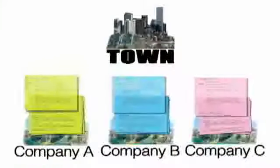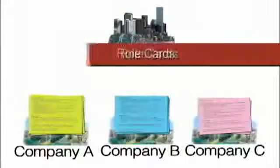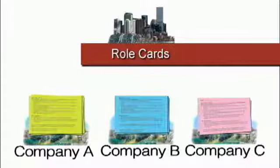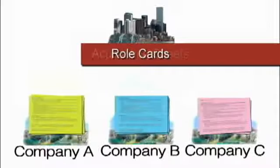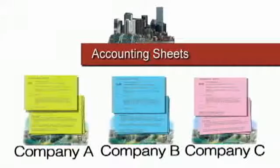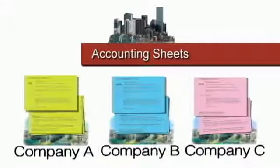Since the role cards are different for company A, company B, and company C, it helps to copy them on three different colors of paper. Likewise, the accounting sheets are specific to each group, so if possible, copy them on the same color paper as the role cards.